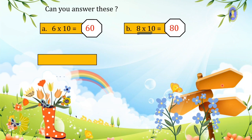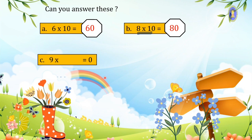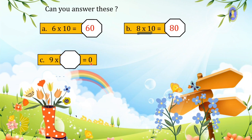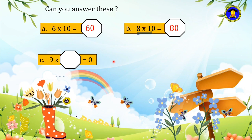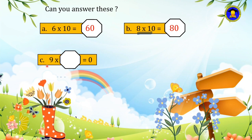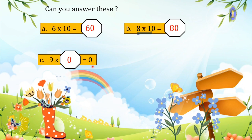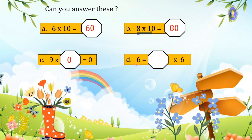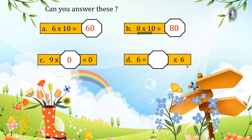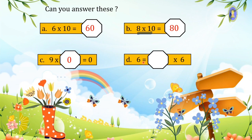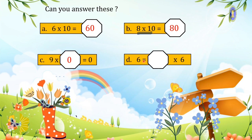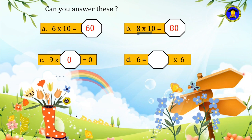Now another question: nine times what number equals zero? Can you remember the zero times table? What number times zero will give zero? Yes, that's right — nine times zero equals zero. Remember: any number multiplied by zero equals zero. The next question: six equals how many times six? One times six equals six, so the answer is one.